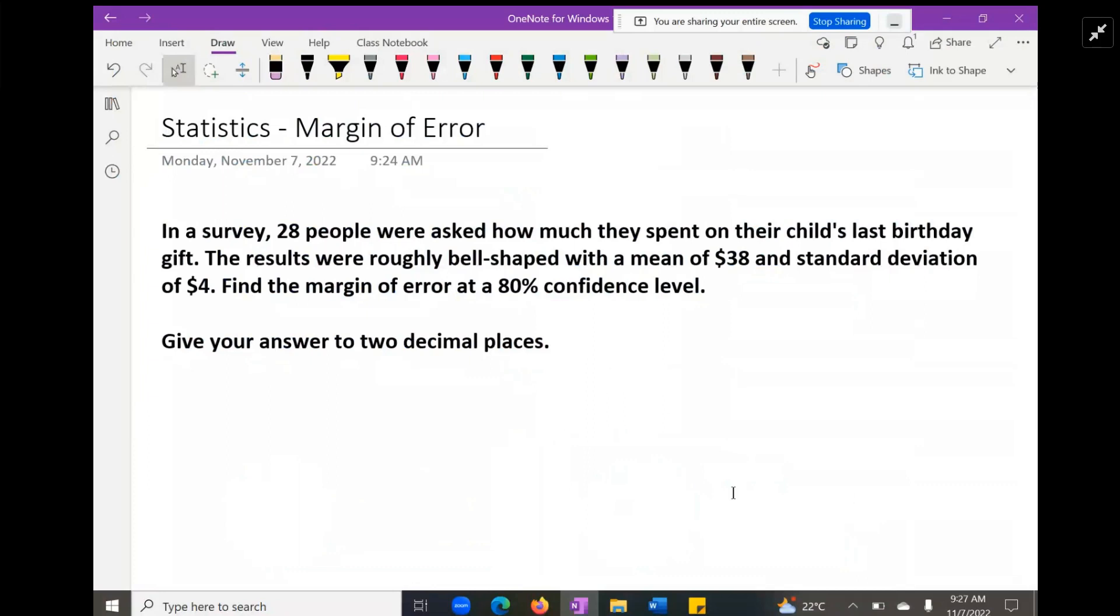It reads: In a survey, 28 people were asked how much they spent on their child's last birthday gift. The results were roughly bell-shaped with a mean of $38 and a standard deviation of $4. Find the margin of error at an 80% confidence level, giving your answer out to two decimal places approximately.